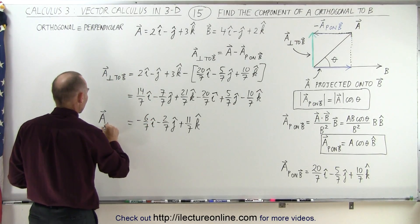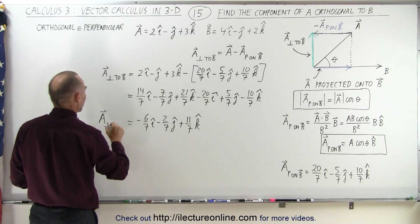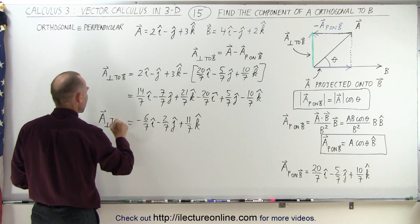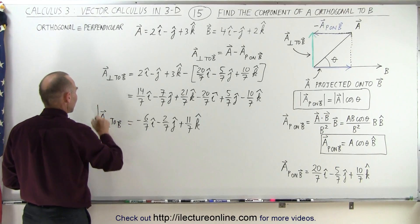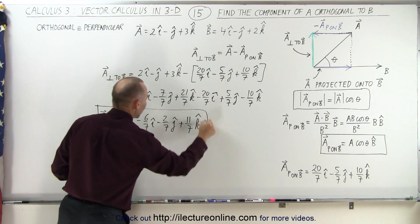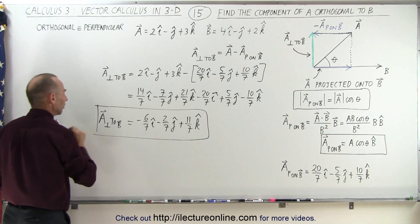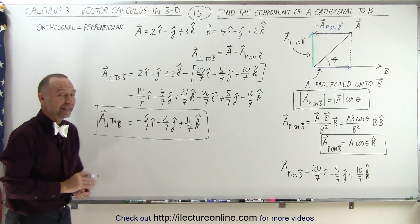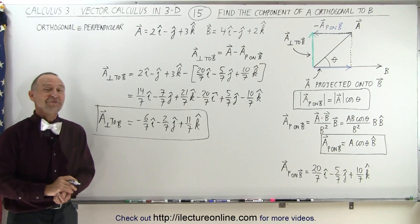So the component of A perpendicular to vector B is simply equal to negative 6 over 7 I, minus 2 over 7 J, plus 11 over 7 K, and that's how it's easily found.